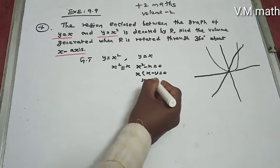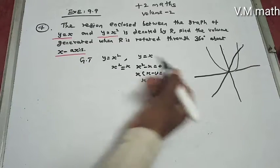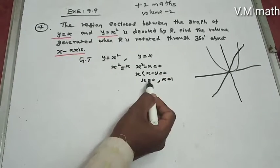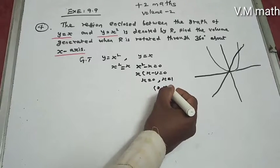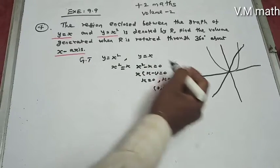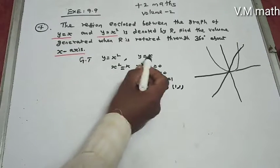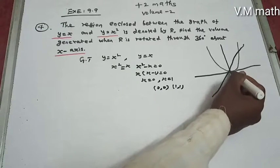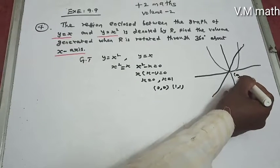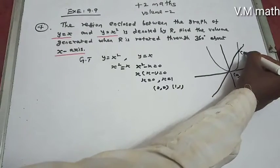When x equals zero, we have the point (0,0). When x equals one, substitute to get the point (1,1). So the intersection points are (0,0) and (1,1), intersecting at the origin and at (1,1).